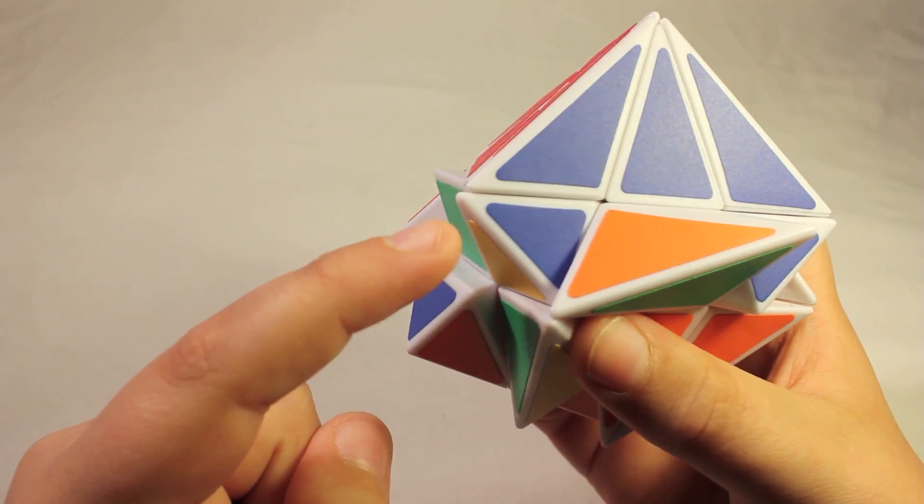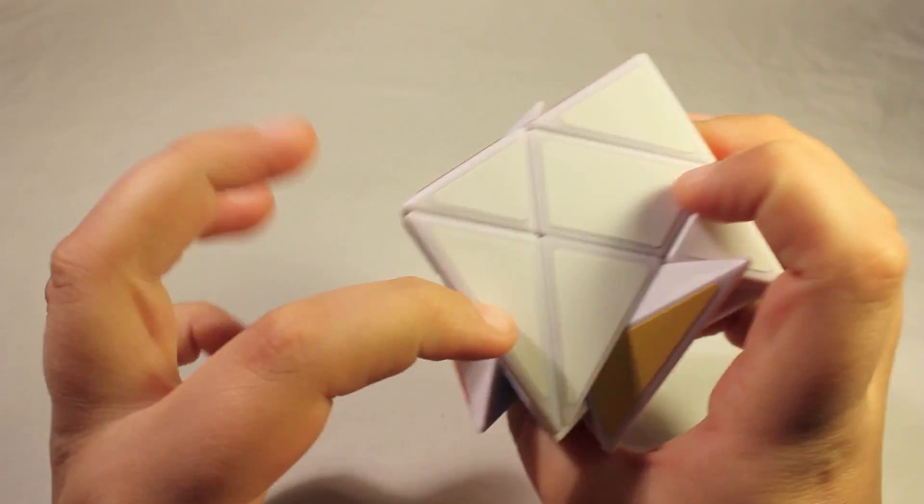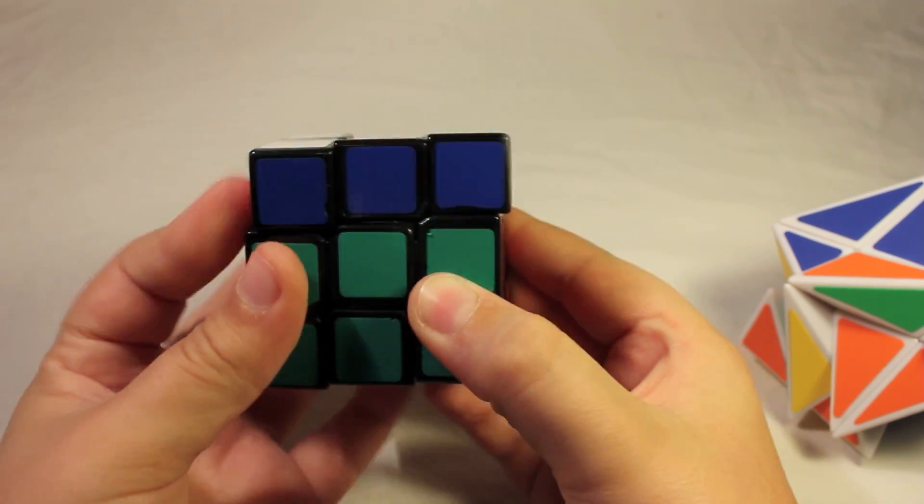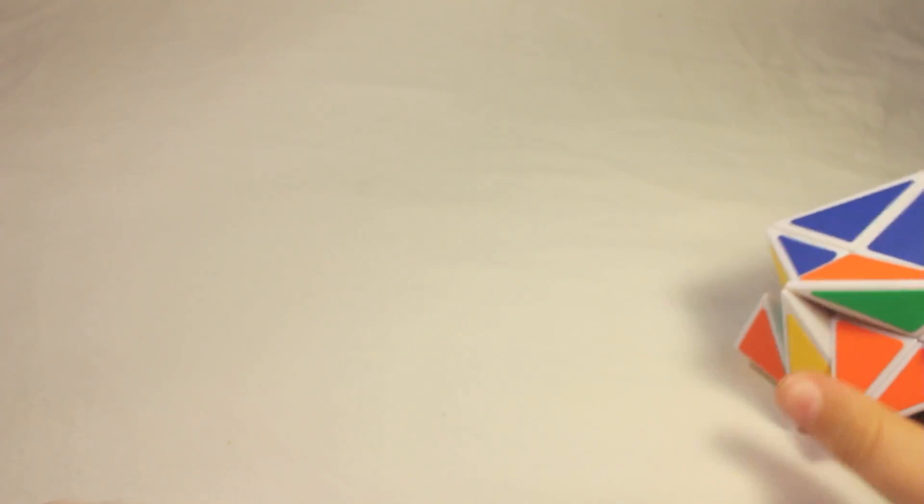So now we have one side done. And we have pretty much have the first layer done. So it'd be like we'd have this layer done on a normal Rubik's cube.